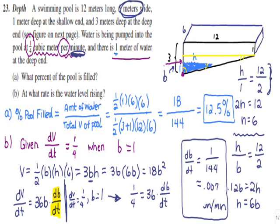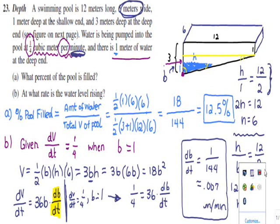Students may find this problem challenging, but stepping back, the similar triangle relationship is really the key element. If you've been working through the textbook in order, you've had several cone problems that use a similar triangle relationship leading up to Problem 23, so hopefully this helps with Exercise 23 from Larson's ninth edition.